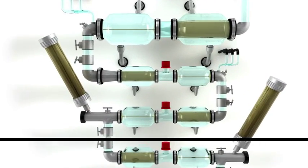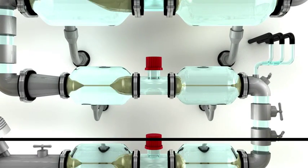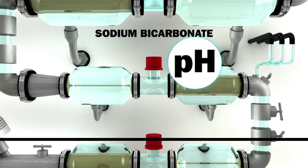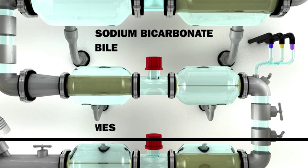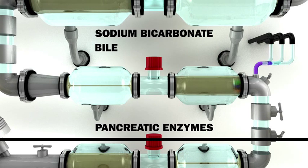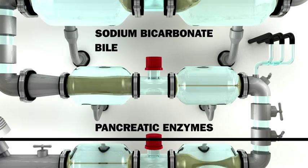In the first part of the small intestine, the duodenum, bicarbonate is secreted to neutralize the pH value. Bile is secreted to emulsify fat. Pancreatic enzymes are secreted that digest fat, carbohydrates and proteins.